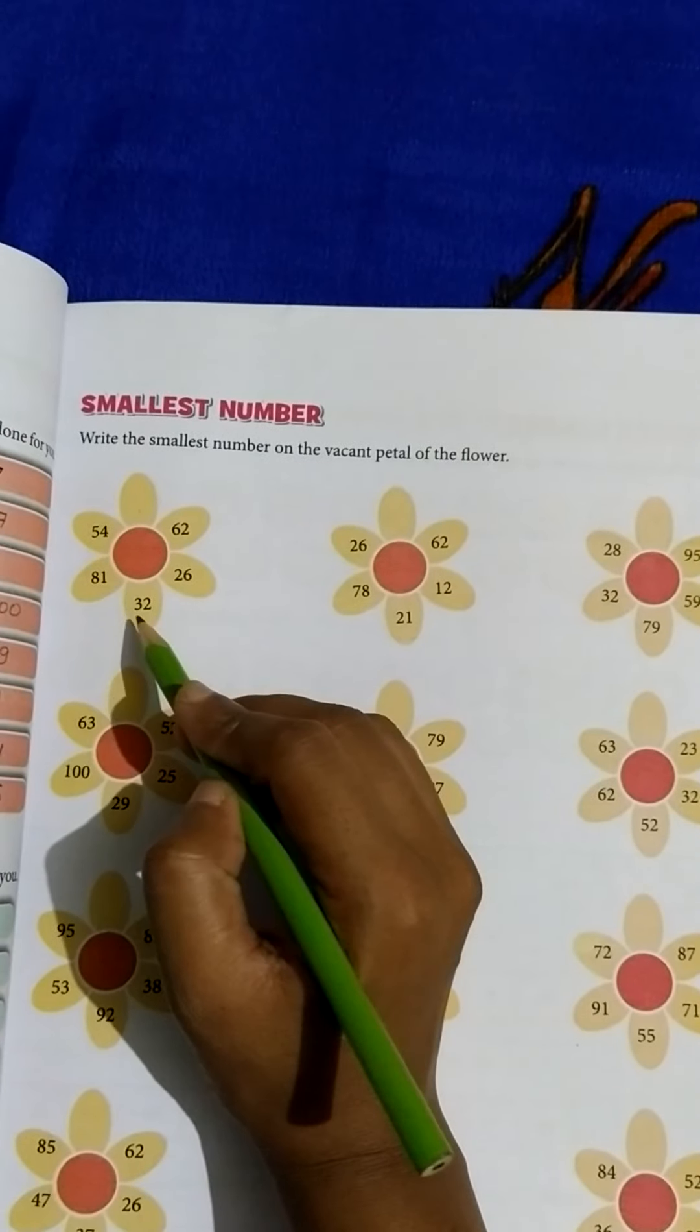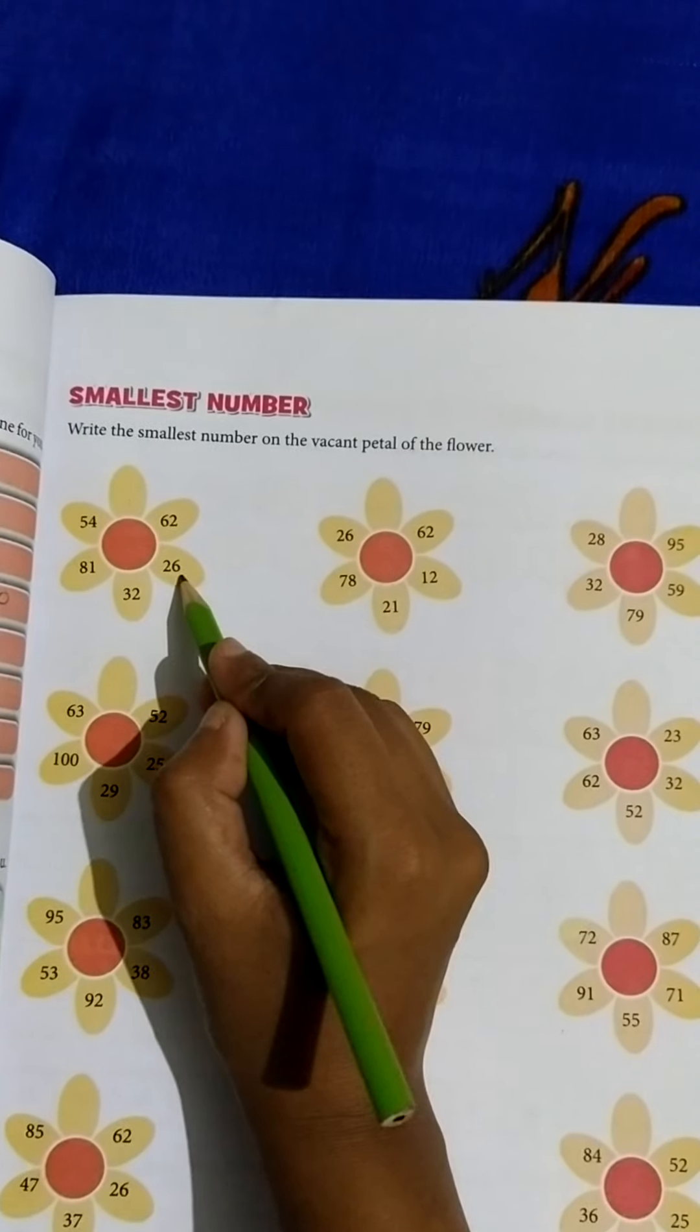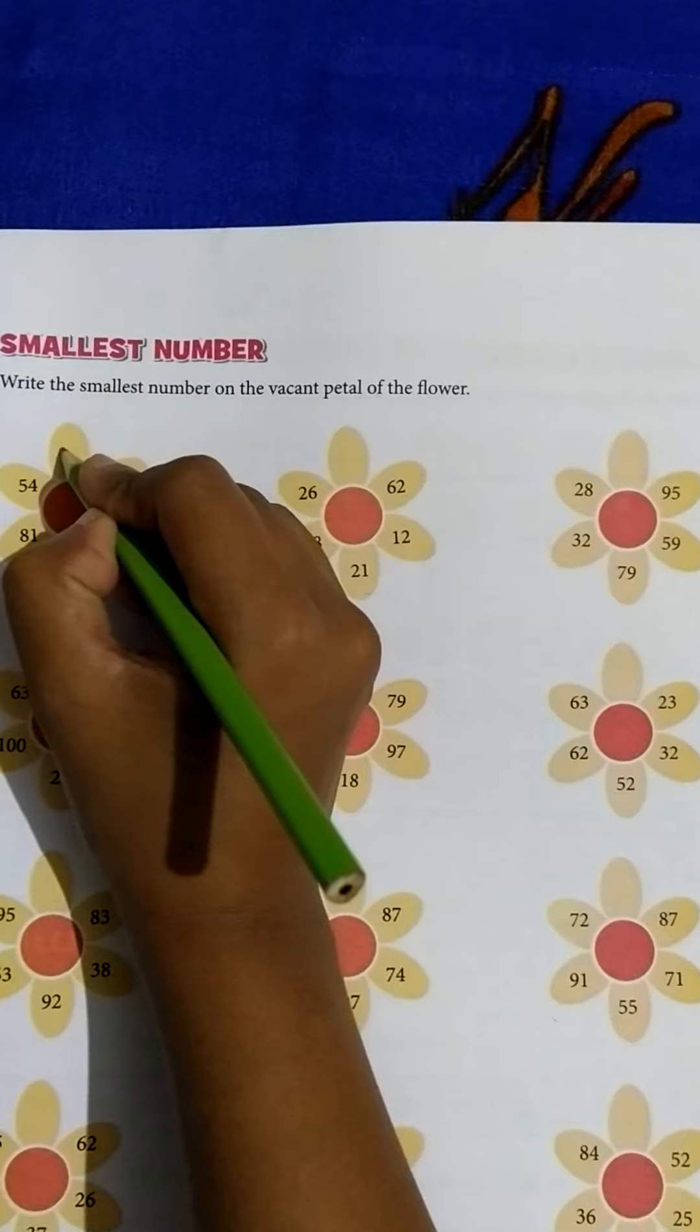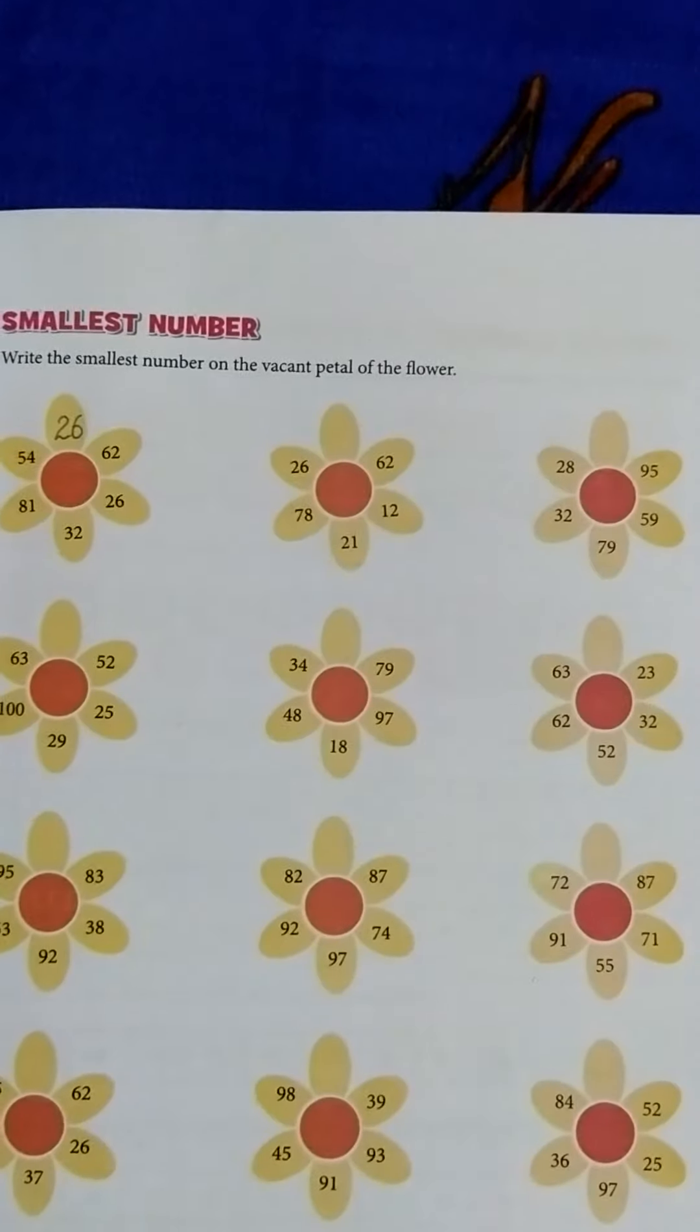In these, which is the smallest number? 26. 26 is the smallest number, then we will write here 26. Understood?